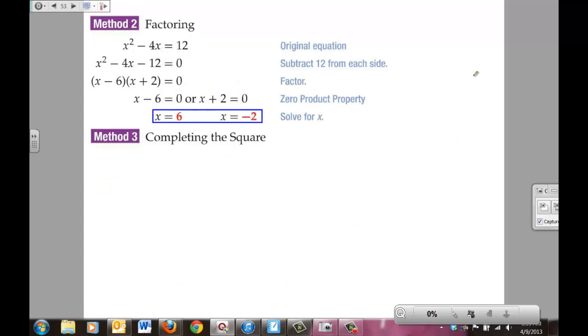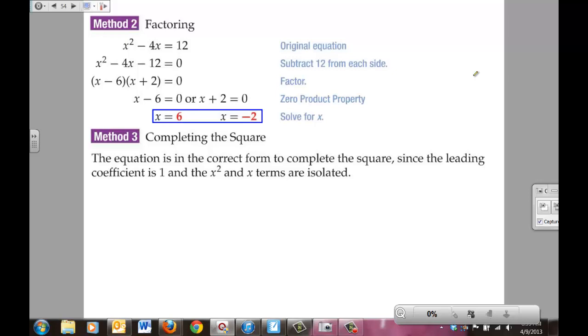Another way you could have done this is by using the completing the square rule that we learned in lesson 4, yesterday's lesson. To complete the square, we're going to take the original equation. I'm going to say the equation is in the correct form to complete the square since the leading coefficient is 1 and the x² + x terms are already isolated. So we don't need to place this in standard form. You leave it in this form for using the completing the square process.